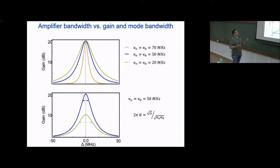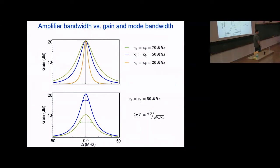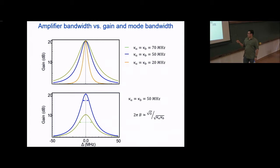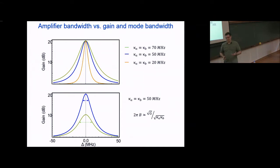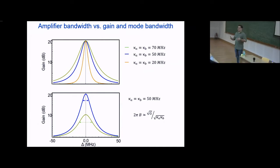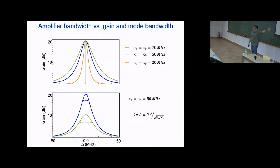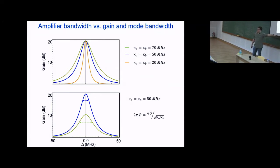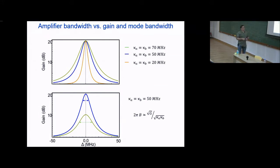The amplifier has a fixed gain-bandwidth product: the dynamical bandwidth equals the linear bandwidth divided by the gain. So for a gain of 10 and 100 MHz of bandwidth, you need to start with a gigahertz of initial bandwidth. By slowly changing the parametric drive strength, you can turn the gain up to whatever value you need, but at the direct cost of bandwidth. Operating at 45 dB gives tons of gain but only a few kilohertz of bandwidth.